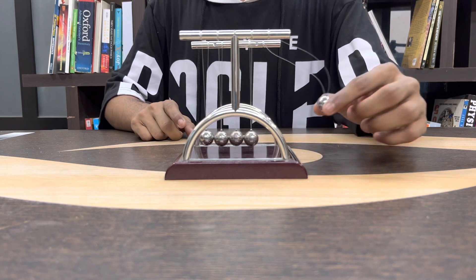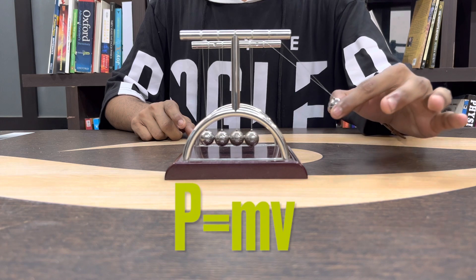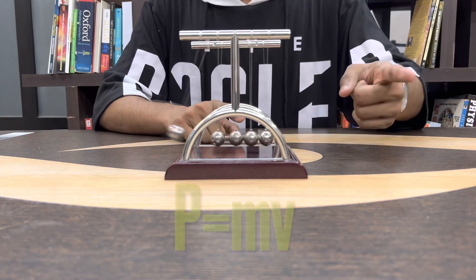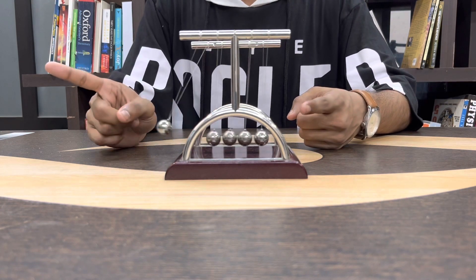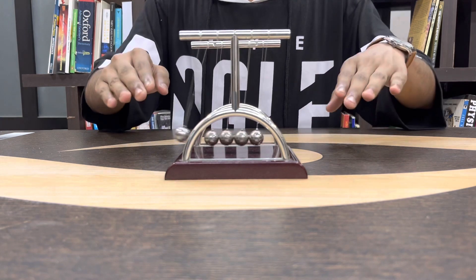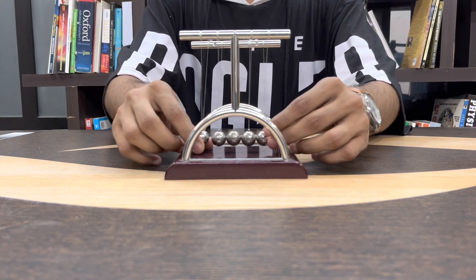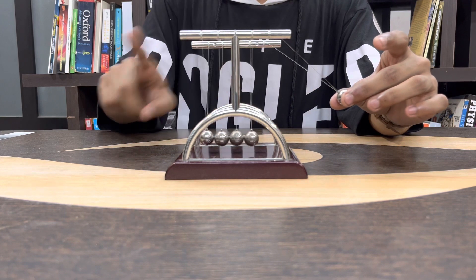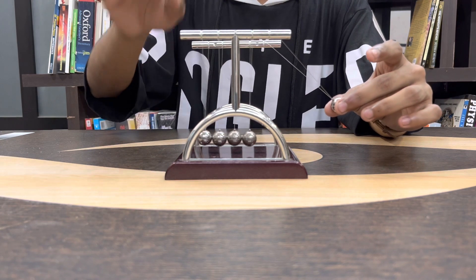So this ball has a mass, it has a velocity. So when I leave it, you can see that if one ball came from here, then one ball will go from there and the rest will be in its initial condition. As it is, it will be in its position.